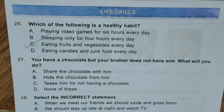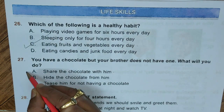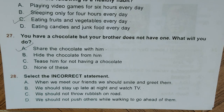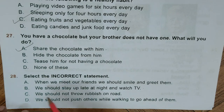Question 27: You have a chocolate but your brother does not have one. What will you do? A. Share the chocolate with him, B. Hide the chocolate from him, C. Tease him for not having a chocolate, D. None of these. Correct answer is A, Share the chocolate with him. Question 28: When we meet our friends we should — A. Smile and greet them, B. Stay up late at night and watch TV, C. Not throw rubbish on the road, D. Not push others while walking. Correct answer is B — wait, the correct answer given is B, stay up late at night and watch TV.